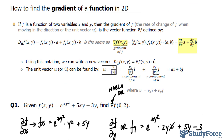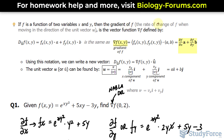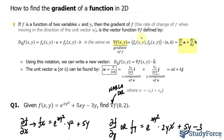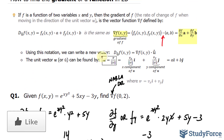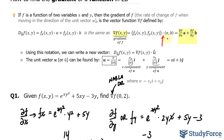To find the gradient of a function in a particular direction, we first find the gradient vector — as we did in question one — and then multiply by the dot product with a unit vector for the desired direction. We've found the vector; now we need to find the unit vector u-hat. The magnitude is found using the Pythagorean theorem: the square root of 3 squared plus 1 squared equals the square root of 10. So the unit vector components are 3 over root 10 for a, and 1 over root 10 for b.